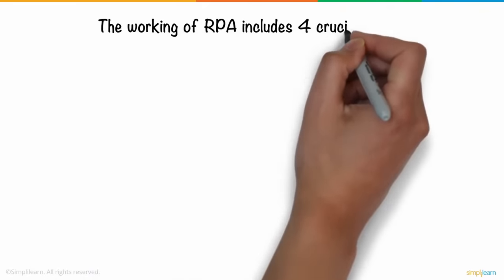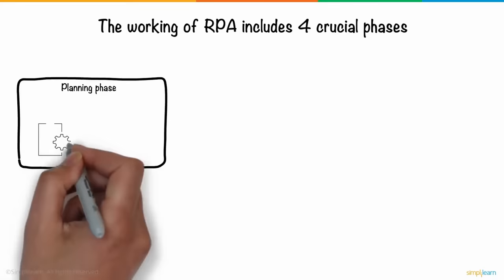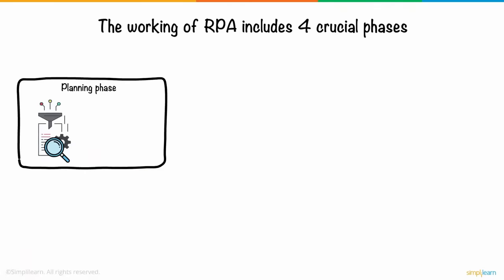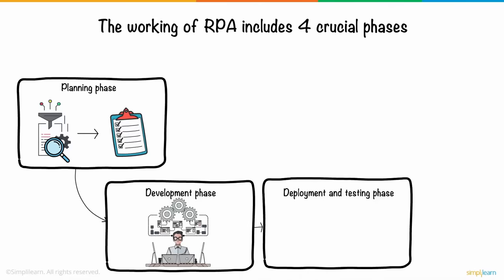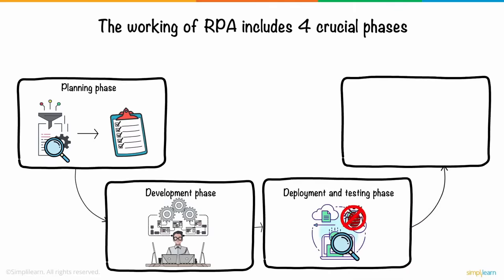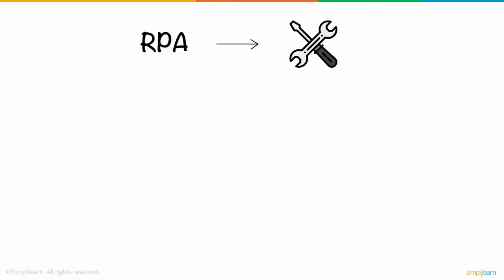The working of RPA includes four crucial phases. One, the planning phase involves gathering the processes to be automated, identifying the test objects, and finalizing the implementation approach. Two, the development phase includes the creation of automation workflows as per the agreed plan. Three, deployment and testing is a vital phase since it uncovers any unexpected outages and ensures a bug-free product. Four, the support and maintenance phase ensures that the product is continuously updated with smooth deployment across the user base. To meet the objectives of RPA, tools are used — software applications that can configure tasks and automate them.